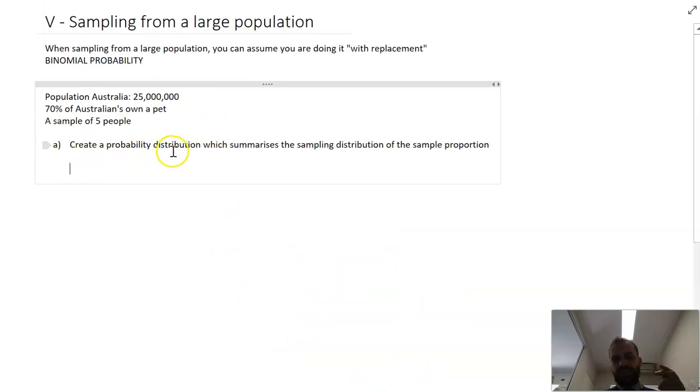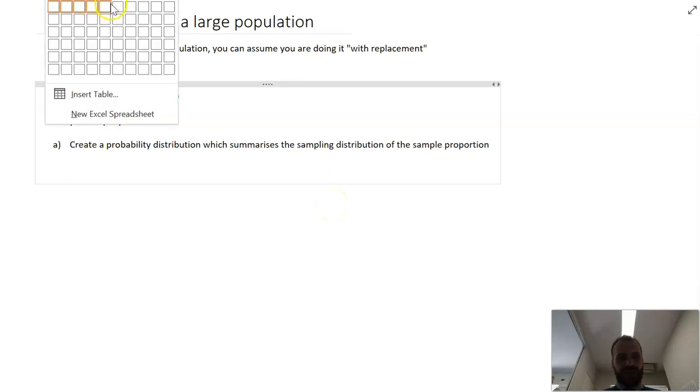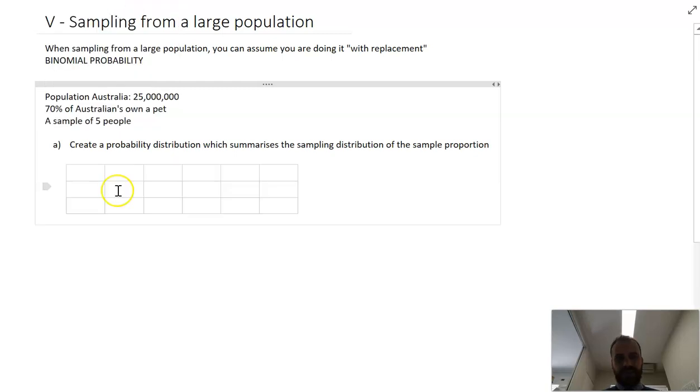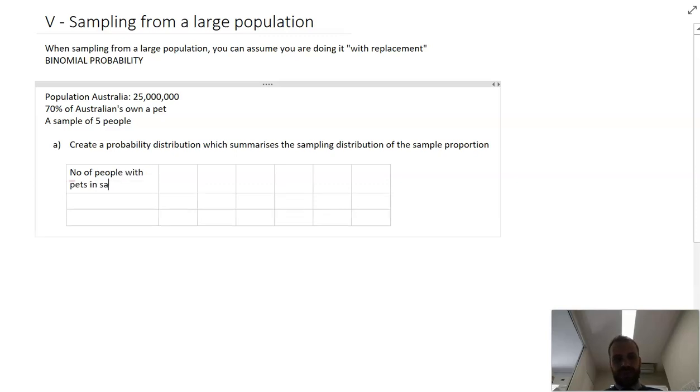The question might be: create a probability distribution which summarizes the sampling distribution of the sample proportion. That's a real mouthful here. But what we're looking for is to create a table that looks like this. I might need one more row there. And then we can fill it in as so. Number of people with pets in sample. I'm taking a sample of five people.